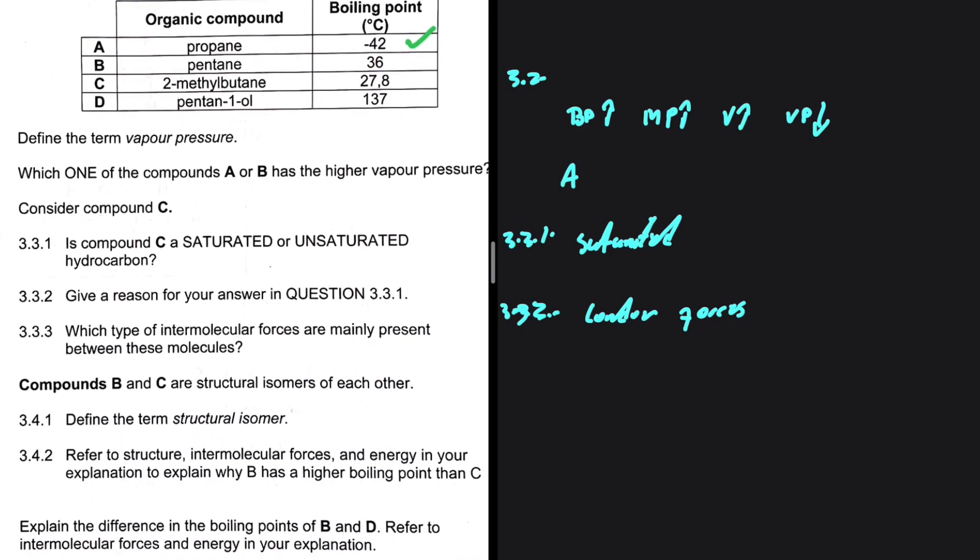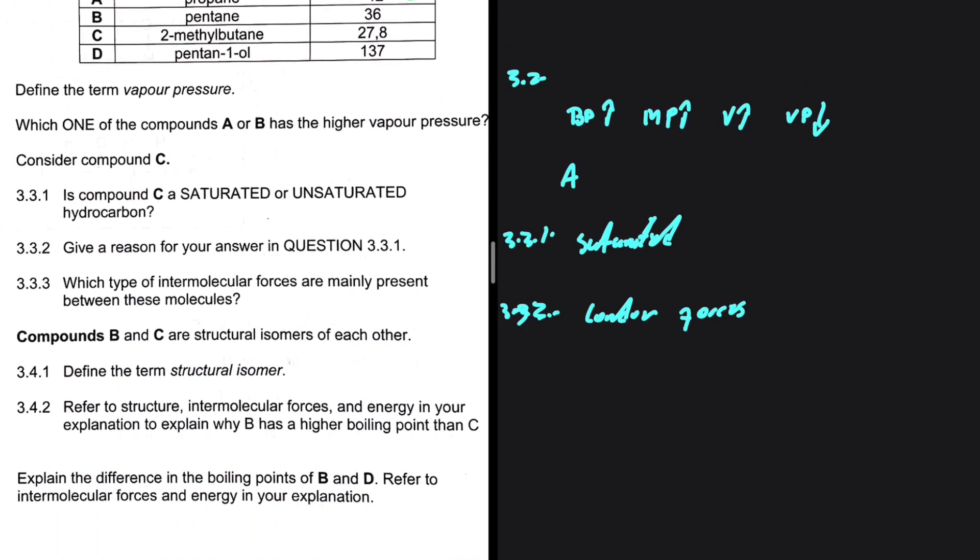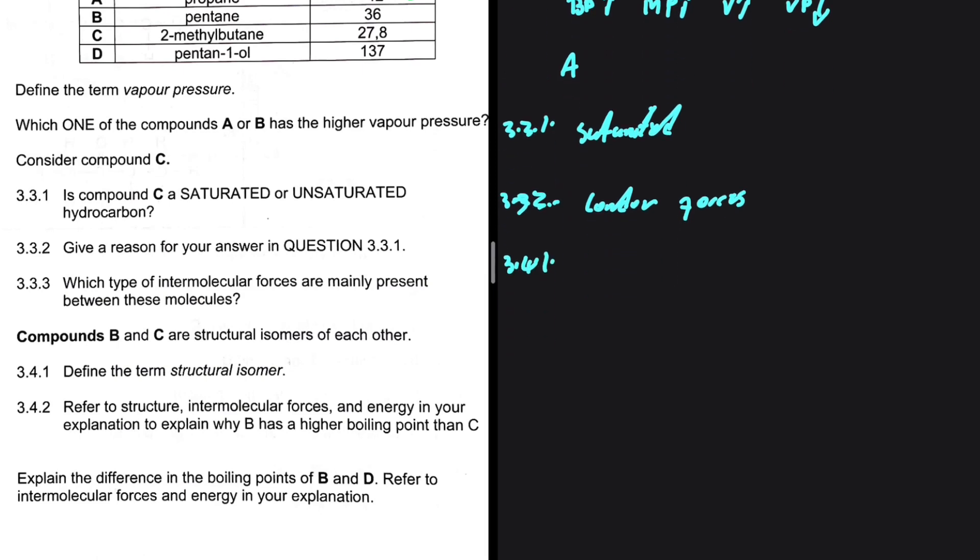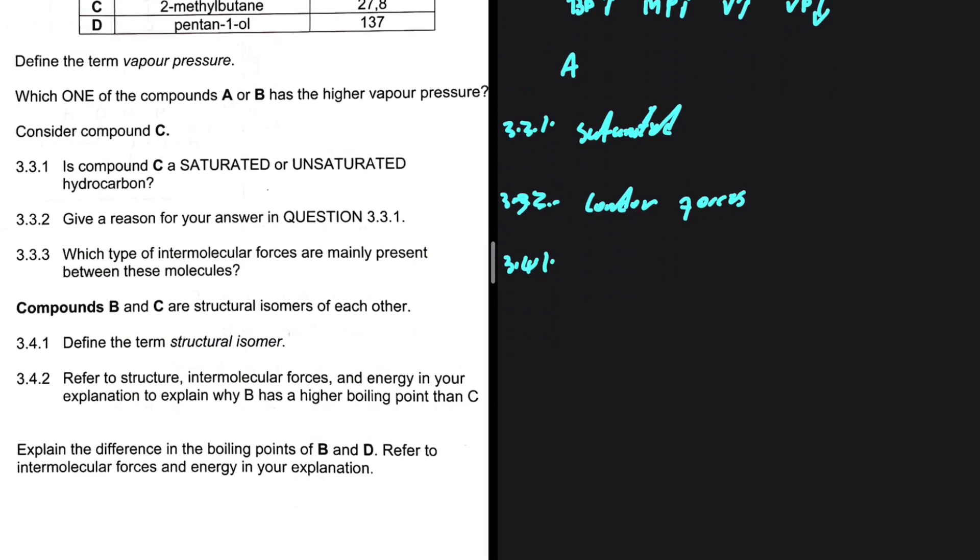3.3.3. Let's go ahead and look at 3.4.1 and 3.4.2. Define the term structural isomer. Organic compounds with the same molecular formula but different structural formula. Same molecular formula but different structural formula. Just like compound B and C. We have C5H12 3.4.2.